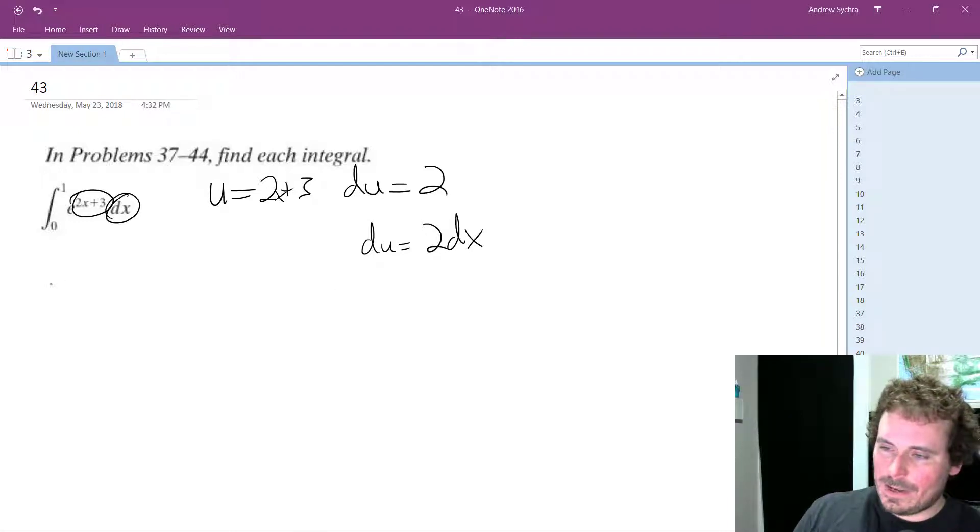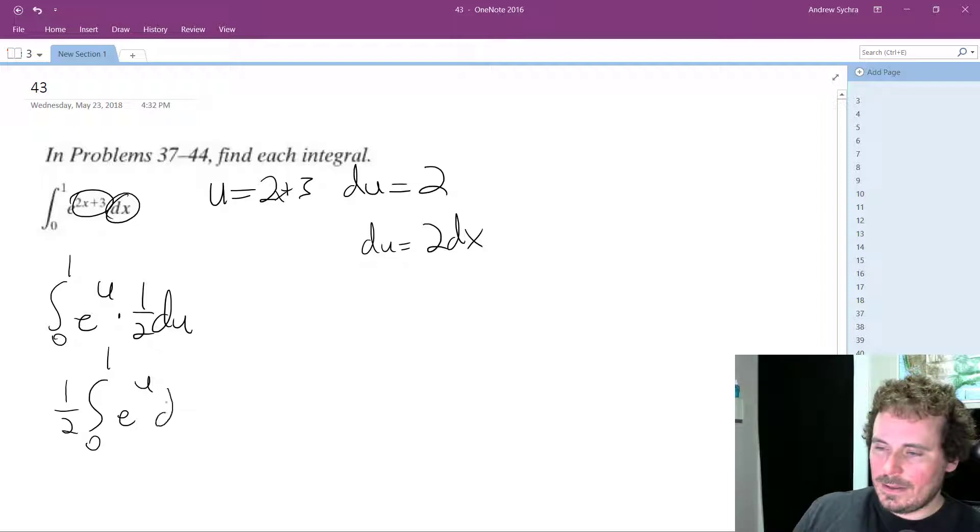So what's going to happen here is we'll have from 0 to 1, e raised to the u times 1 half du. So 1 half, 0 to 1 of e raised to the u, du is going to be equal to 1 half e raised to the u plus c.